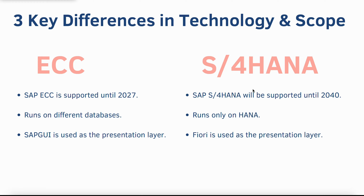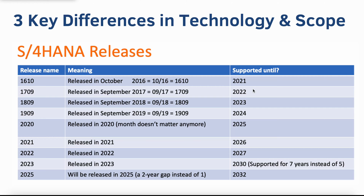Post-2027, SAP customers won't receive support for new bugs from SAP for the ECC system. Whereas SAP has committed that S4HANA will be in support at least until 2040. There is a small nuance here: S4HANA as a product will be supported until 2040, but the versions of S4HANA — which SAP calls releases — will be supported only for seven years starting from 2023. For example, the latest release S4HANA 2023 will be supported until 2030, and S4HANA 2025 will be supported until 2032. SAP recently changed their strategy so each release is now supported for seven years, and a new release is issued every two years instead of one per year as previously.